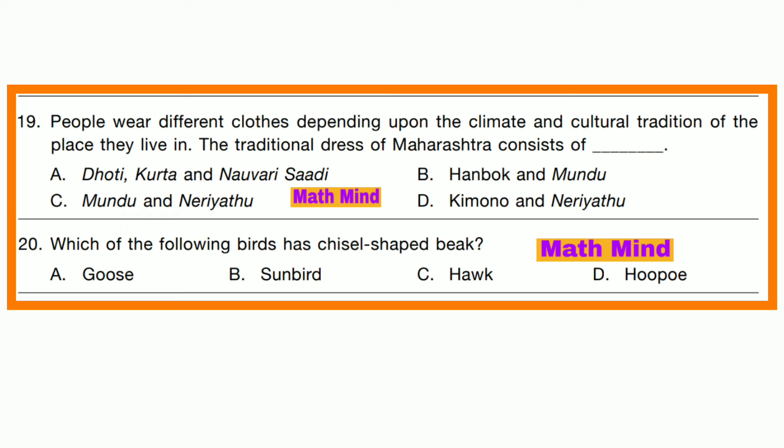Question number 19. People wear different clothes depending upon the climate and cultural tradition of the place they live in. The traditional dress of Maharashtra consists of dhoti, kurta and Navari Sadi. Option A is correct. Question number 20. Which of the following words has diesel saved? Option D is correct.